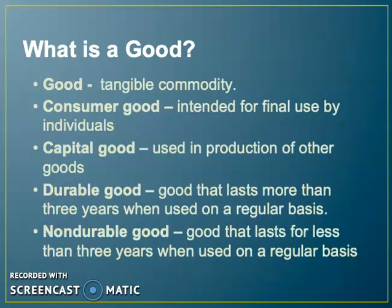Our first thing we're going to look at is a good. A good is a tangible commodity, but there are many different types of goods. We have consumer, capital, durable, and non-durable. A consumer good is what is intended for final use by the one who purchases or consumes it. For example, if you buy something in the store solely for you, that is a consumer good.